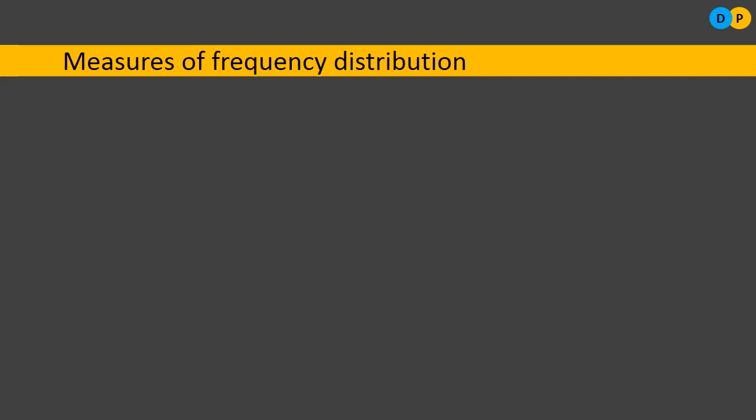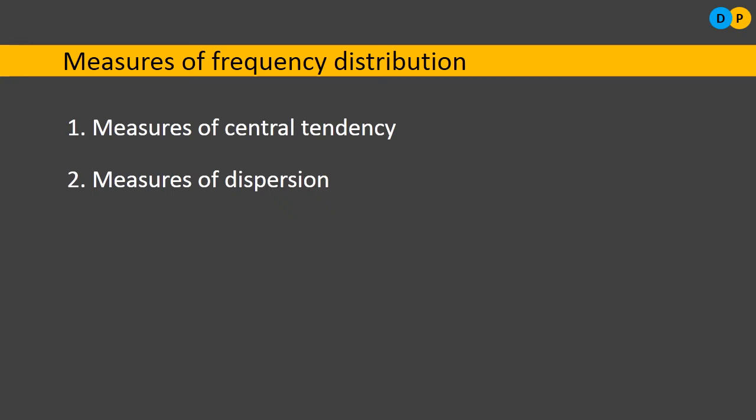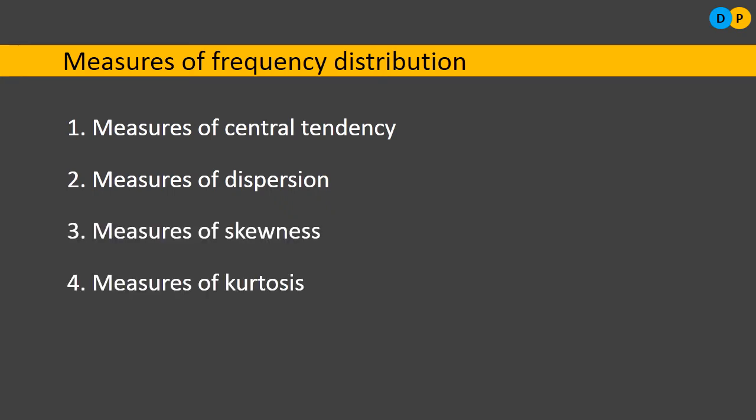A frequency distribution is generally characterized by the following four measures: measures of central tendency, measures of dispersion, measures of skewness, and measures of kurtosis.